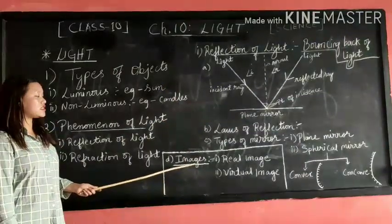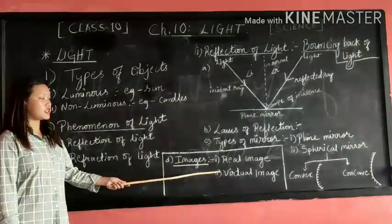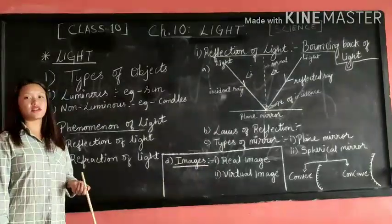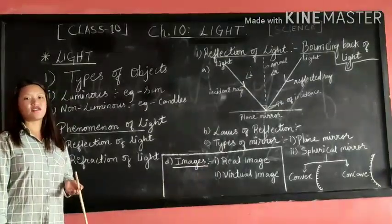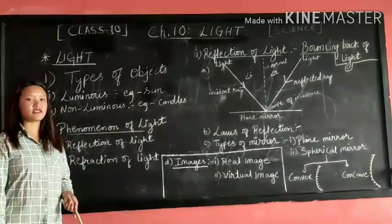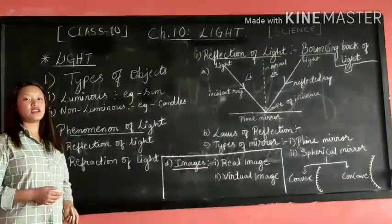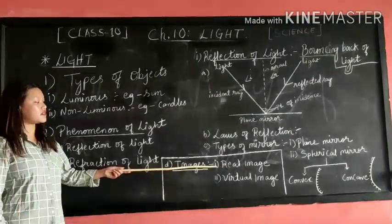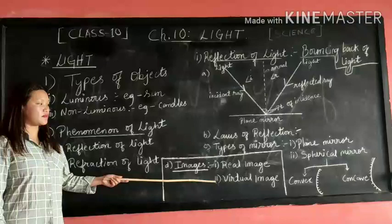In mirrors, images are formed. All of us know what is image. And then these images are also of two types. First, let us see what is an image. An image is the optical appearance where rays of light converge after reflection or where they appear to diverge from. And then these images are of two types: real image and virtual image.